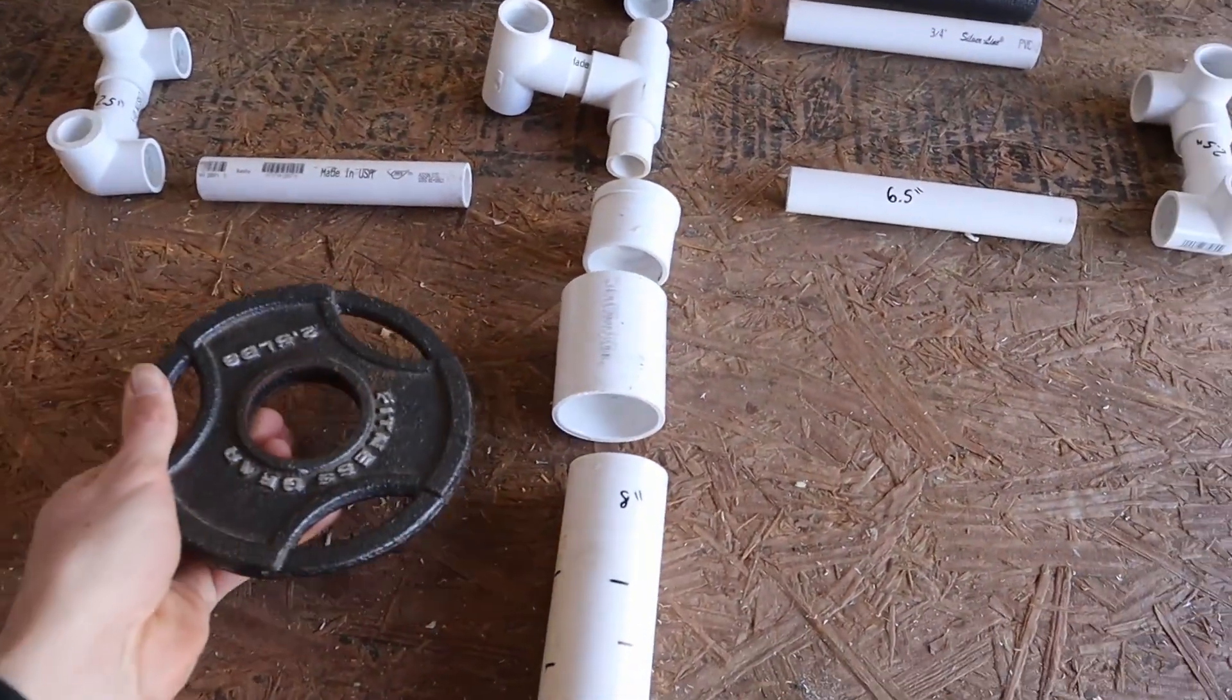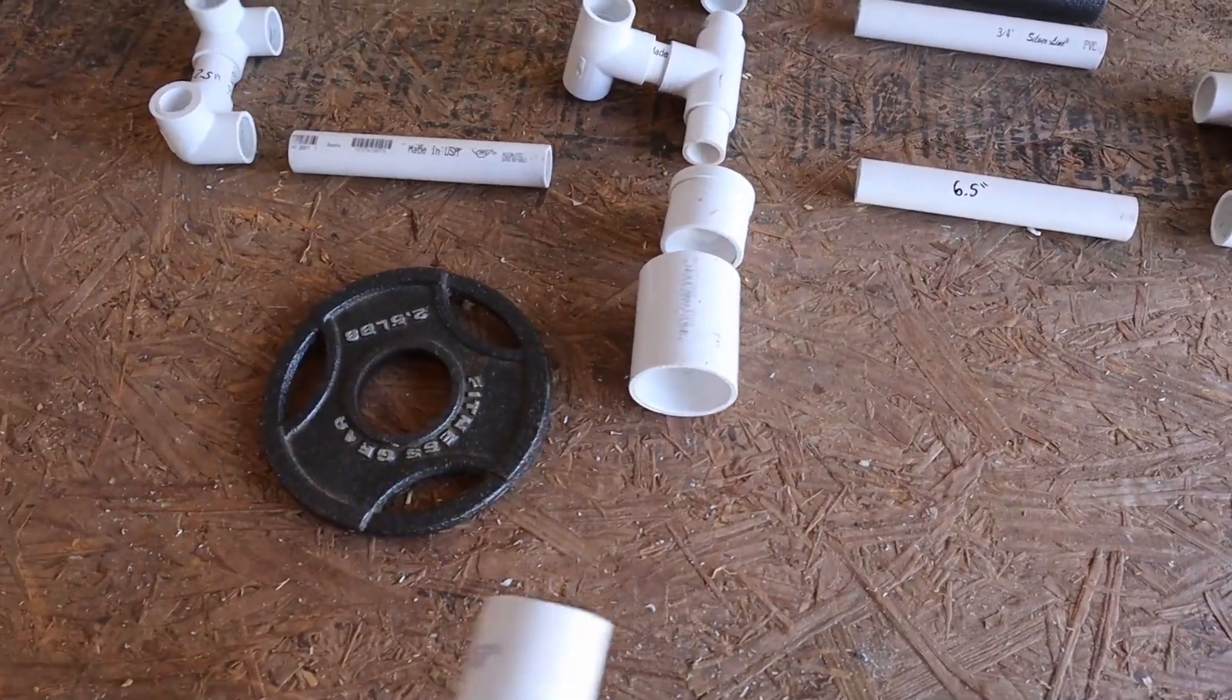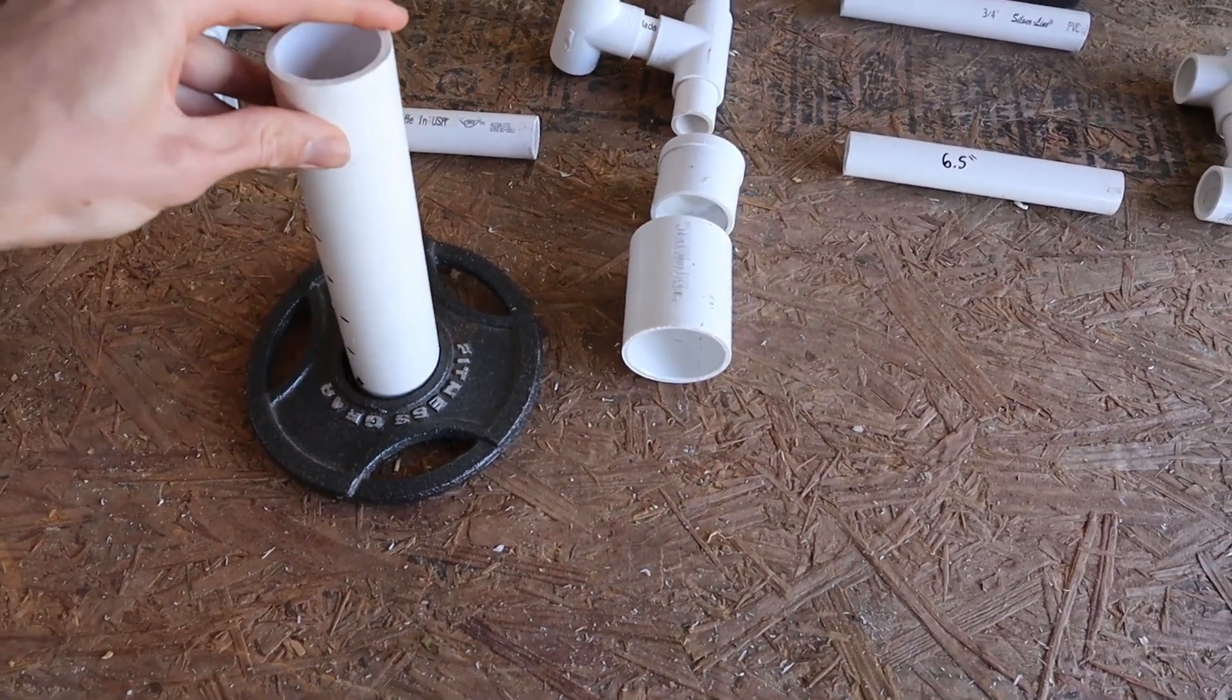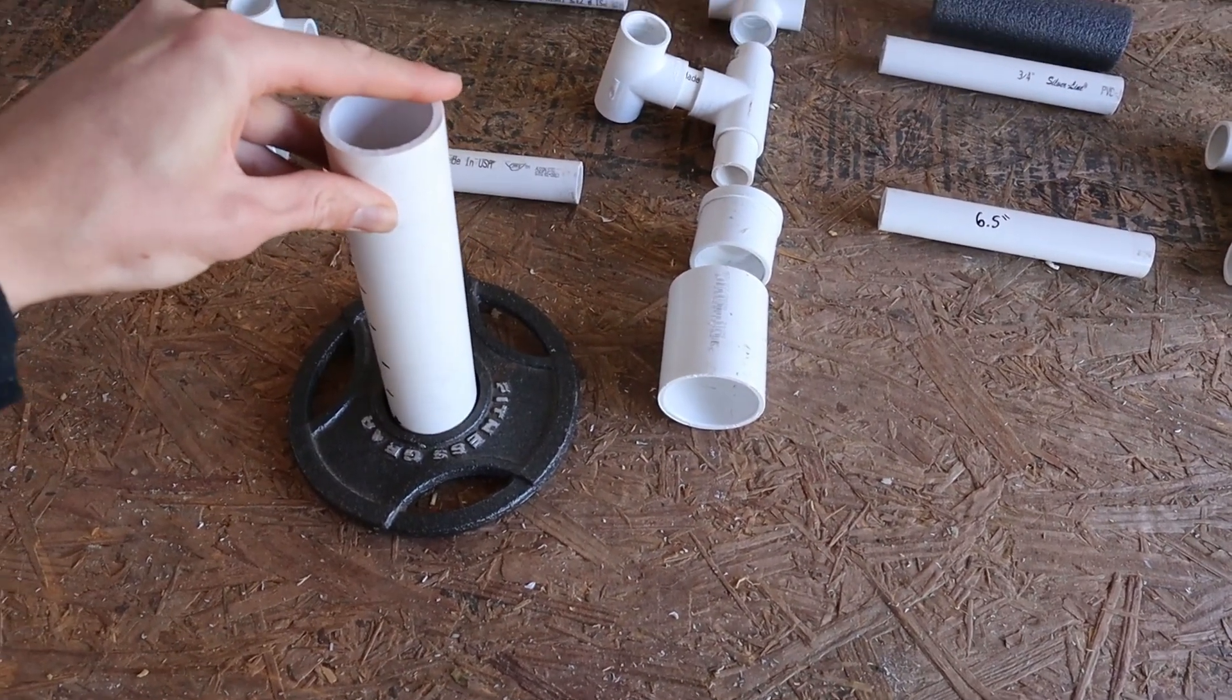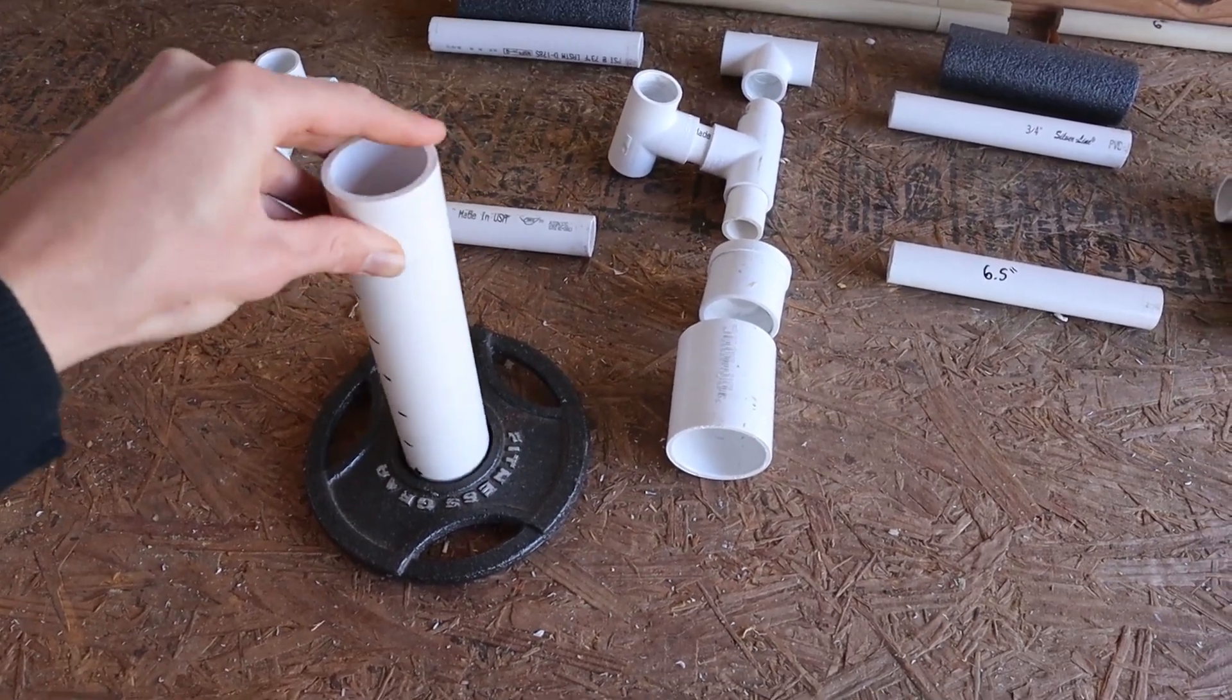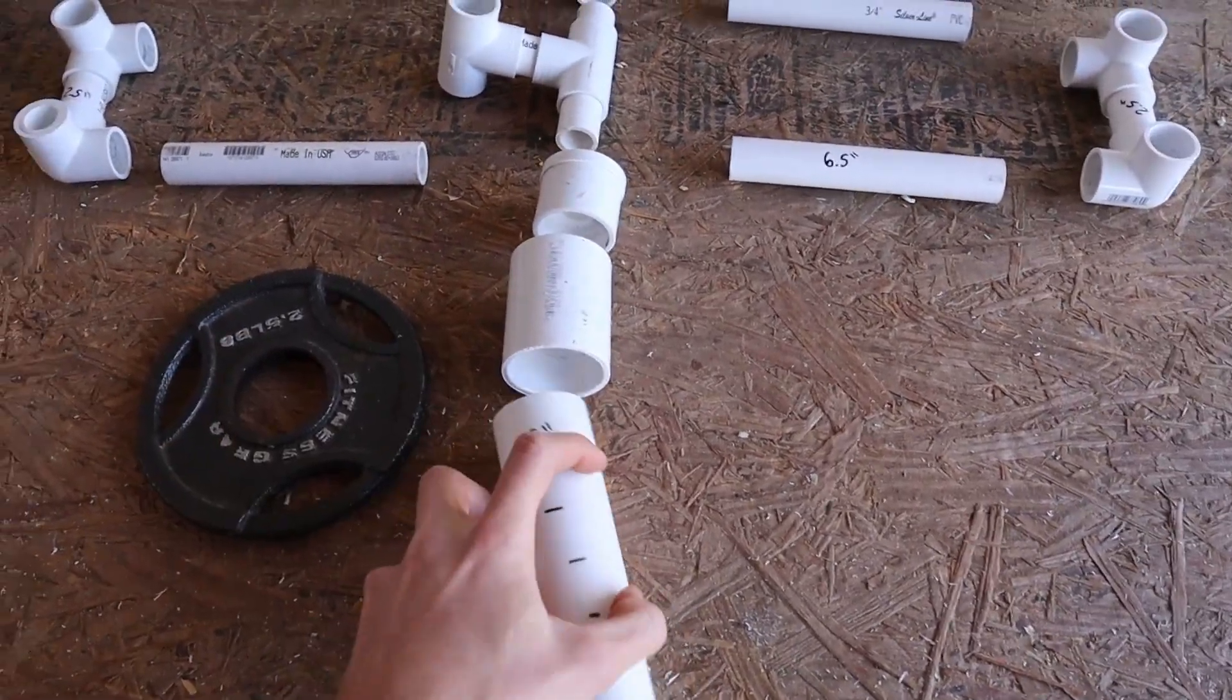So I'm designing this around Olympic weights and you can see that's the closest fit as far as PVC goes to the inside of an Olympic weight so there's not a lot of slop and a lot of play and that will be on the end of this thing.